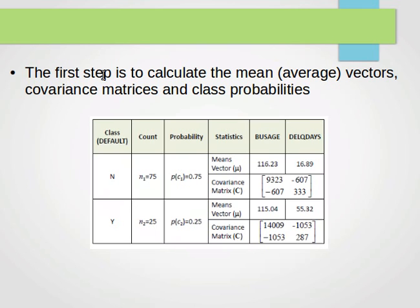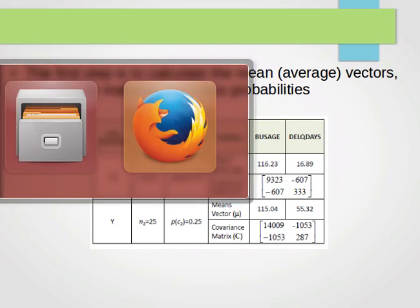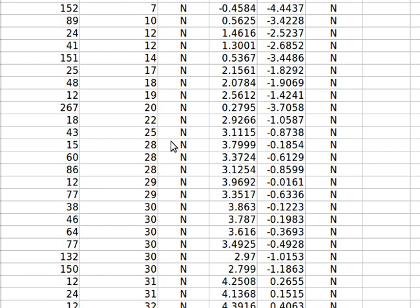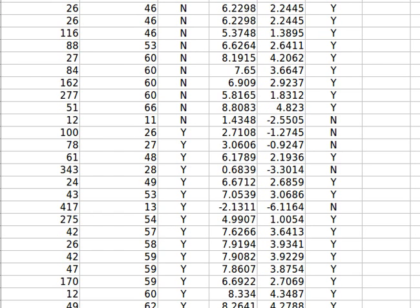The first step is to separate the data into two classes, yes and no, into two subsets. One subset for the no class, other subset for the yes class. So the first one will have 75 instances, the second one will have 25 instances.